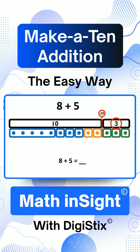3 is the number over 10. We already know that 10 plus 3 is 13. That means 8 plus 5 also equals 13.